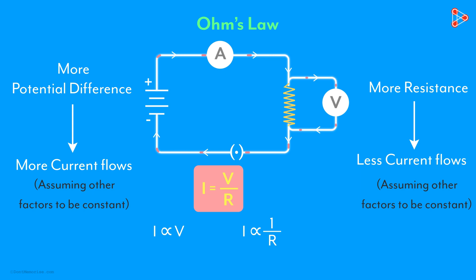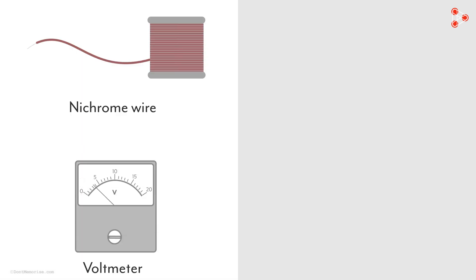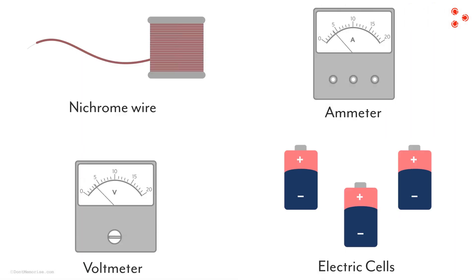Let's do a quick activity to understand Ohm's law. We would need a nichrome wire, a voltmeter, an ammeter and three electric cells of very low voltages, somewhere in the range of 1 to 1.5 volts.